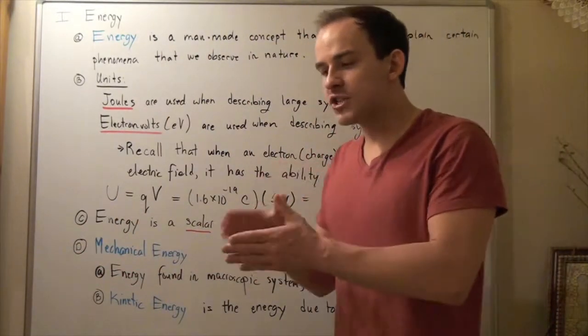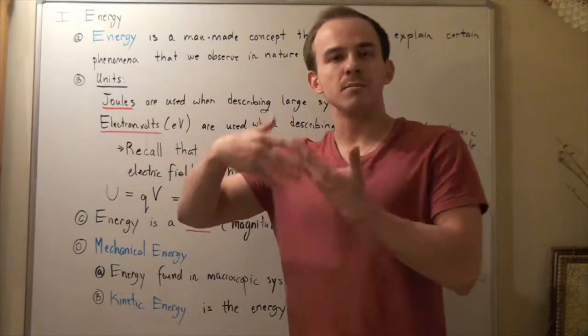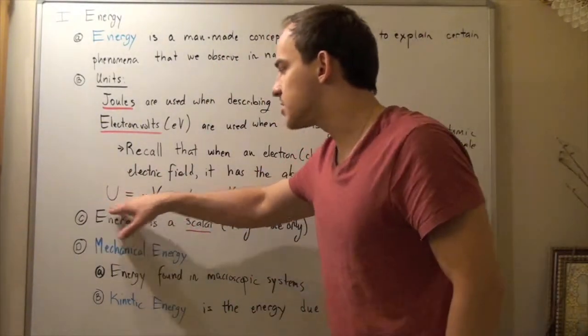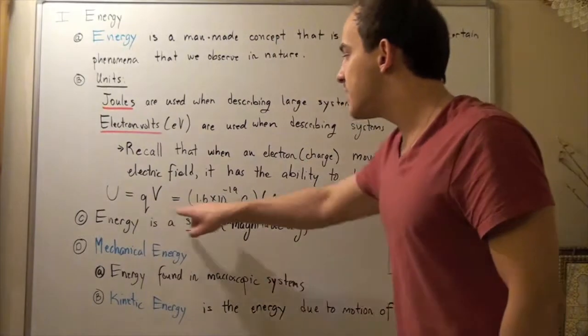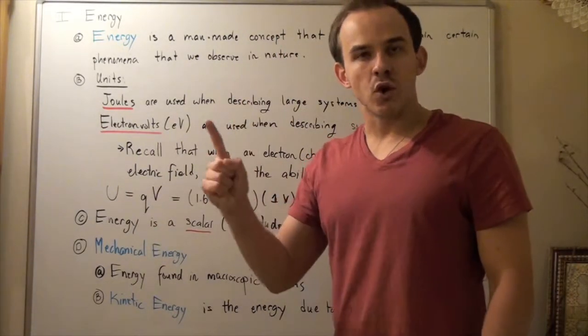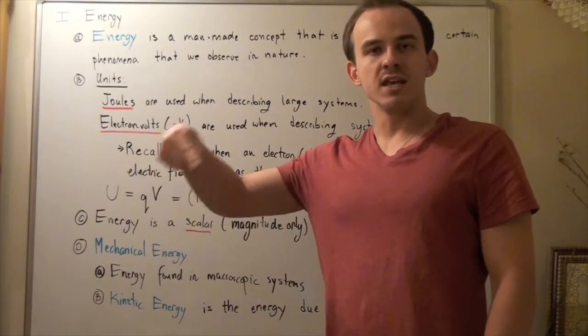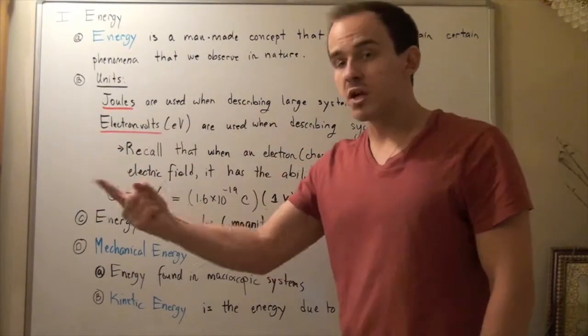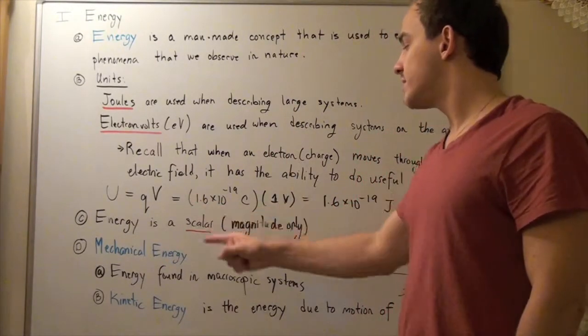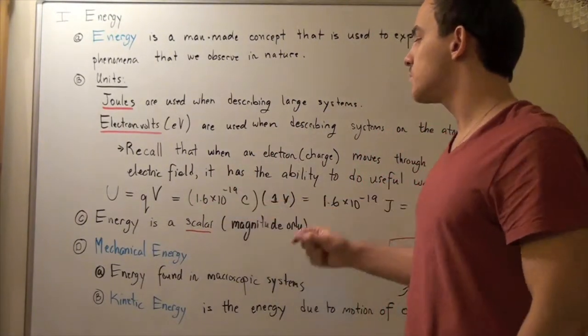So, the amount of charge that moves a certain distance in some electric field is given by the following formula, which gives us joules, energy. And this equals, now suppose we're talking about one electron flowing some distance d with some electric field or through some electric field. Then we can say, because one electron has a charge of 1.6 times 10 to the negative 19 coulombs, we simply plug that in.